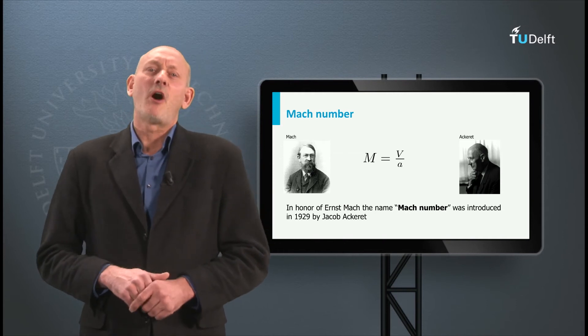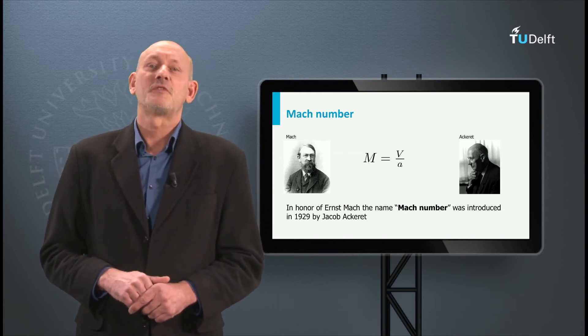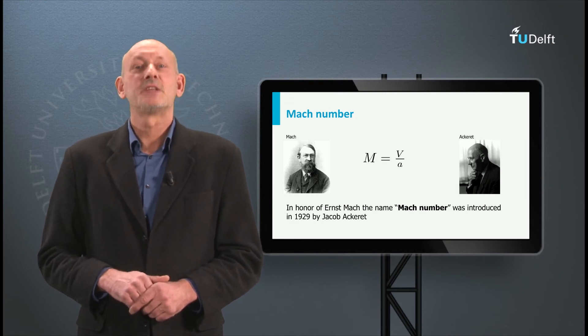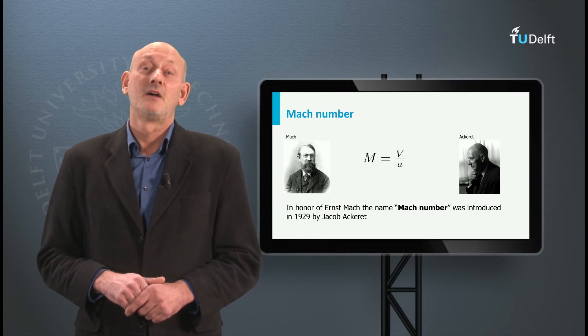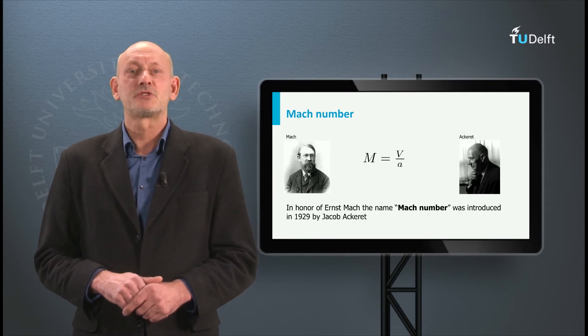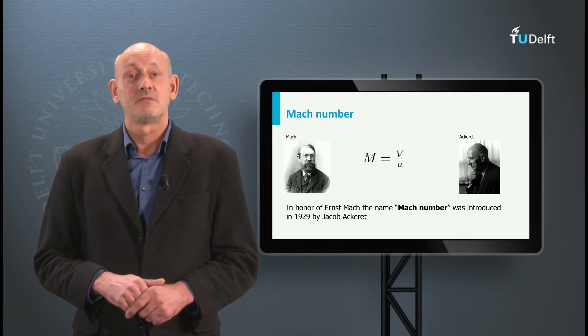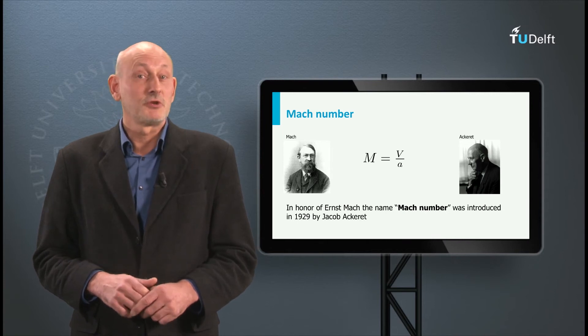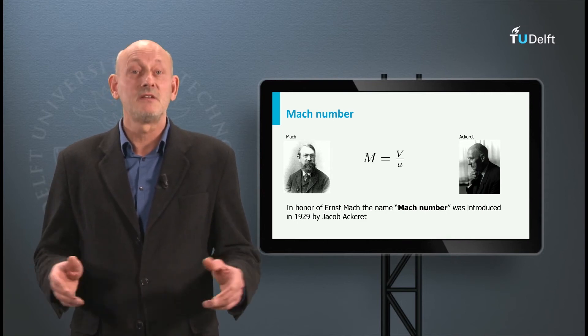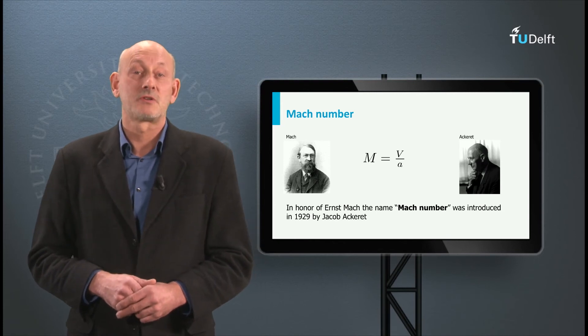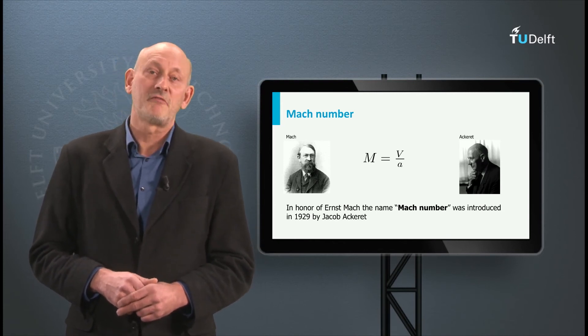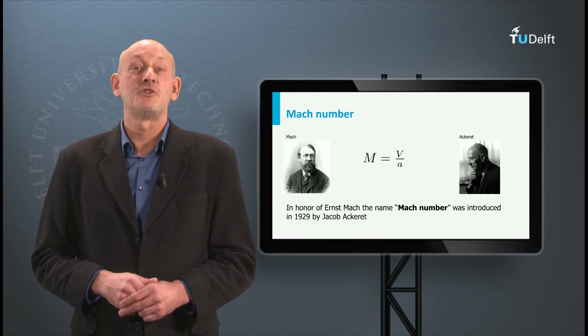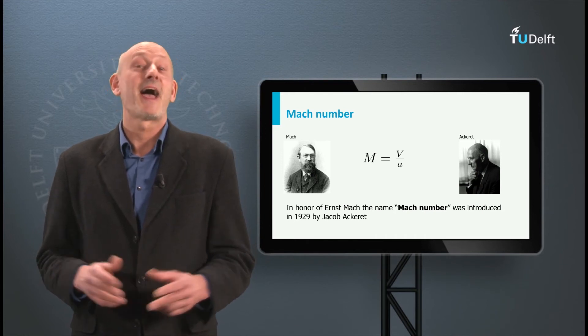In aerospace engineering we often use the ratio of the actual speed over the speed of sound. It's called the Mach number. It was named after the Austrian physicist Ernst Mach, who was one of the first to study compressibility and the speed of sound in great detail. However, during Mach's lifetime the name Mach number was unknown. It was only after his death in 1916 that an influential aeronautical engineer called Jacob Akeret during a conference in 1929 proposed to give the ratio V over A the present name. And so it happened.